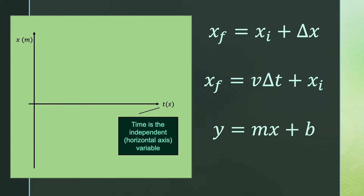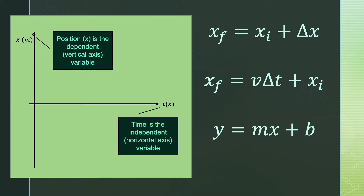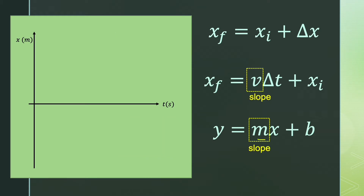The horizontal axis is for our independent variable. We're looking at final position as something moves through time, so time is our independent variable. As time passes, position changes — that's the dependent variable on the vertical axis. Going back to slope-intercept form, m is slope. By analogy, velocity is the slope of the graph — it's rise over run, which is change in position over change in time.